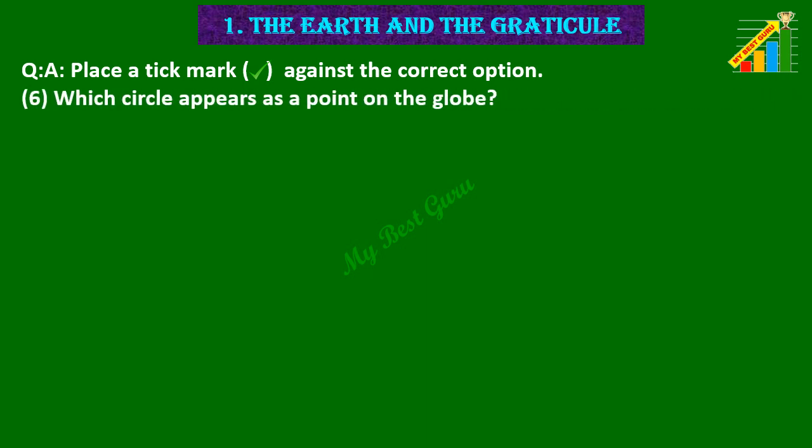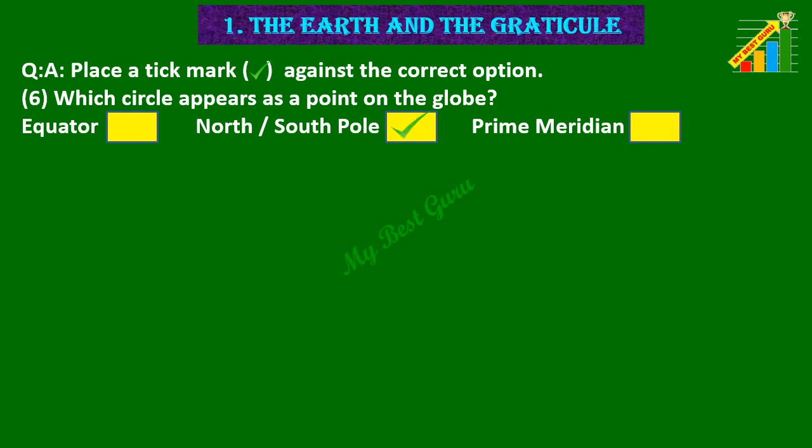6. Which circle appears as a point on the globe? Options are equator, north-south pole, prime meridian. Correct option is north-south pole.